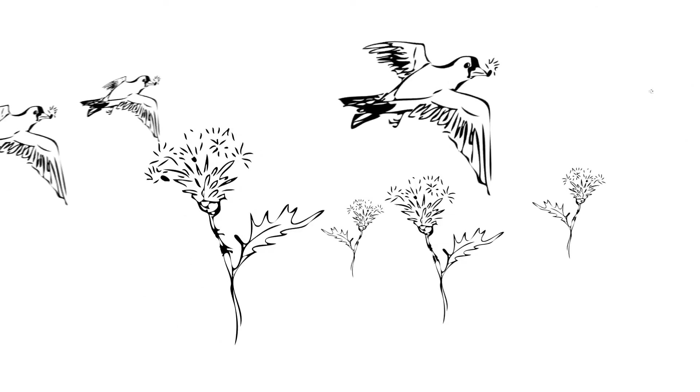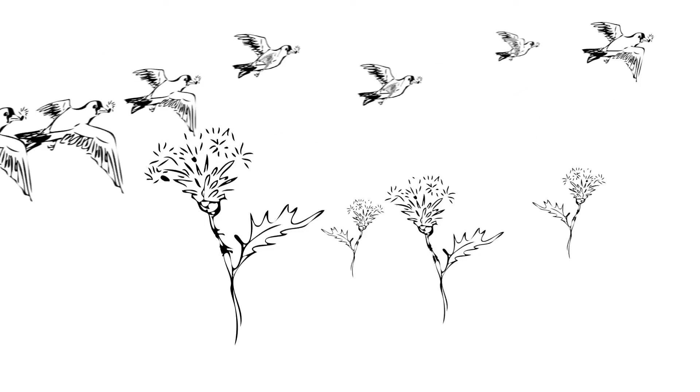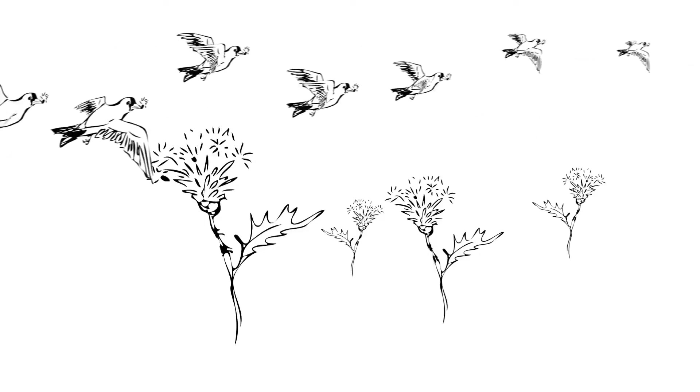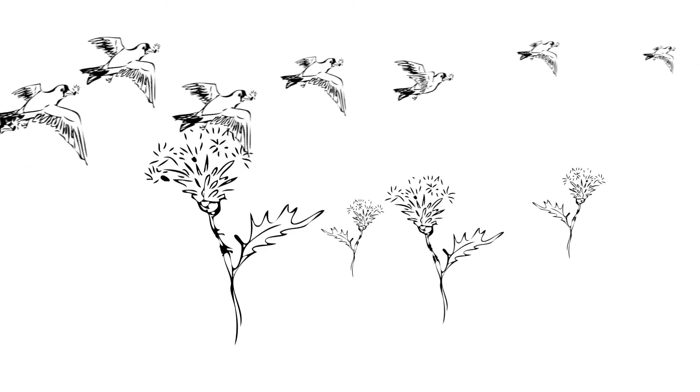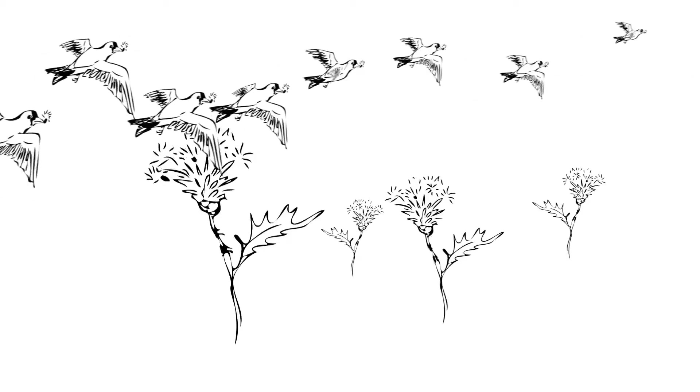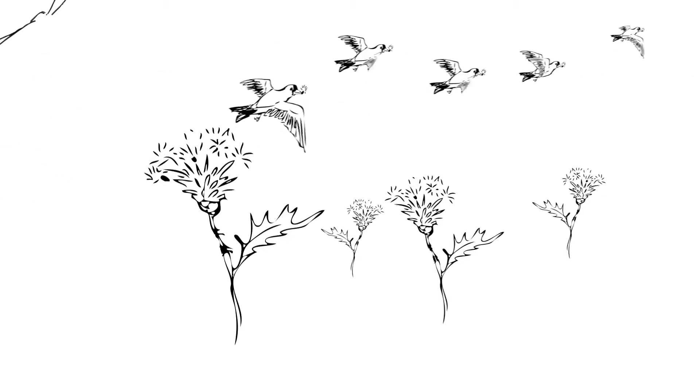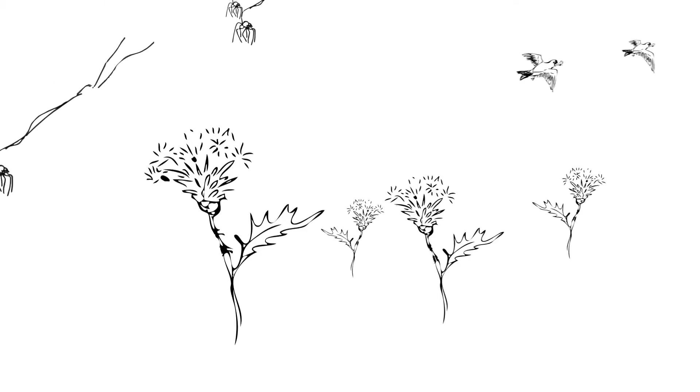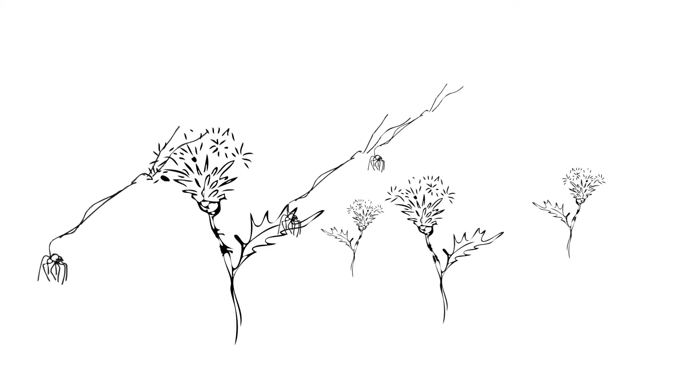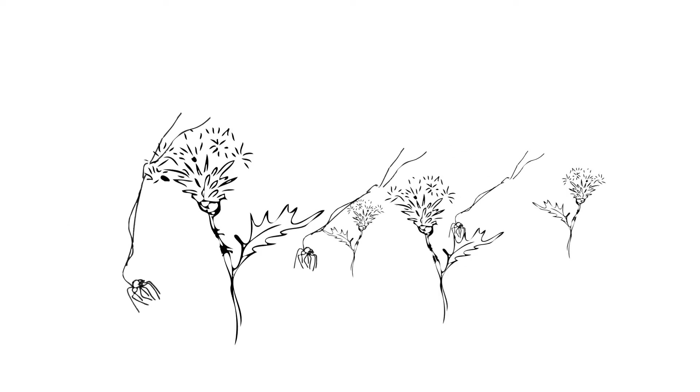Bird migration is an obvious dispersal mechanism. Bird movements can easily result in the establishment of new populations of a species where they didn't exist before. But did you know that spiders can also disperse through something called ballooning? Young spiders can release fine silk threads that are caught by the wind, carrying the spider aloft and to new territories.